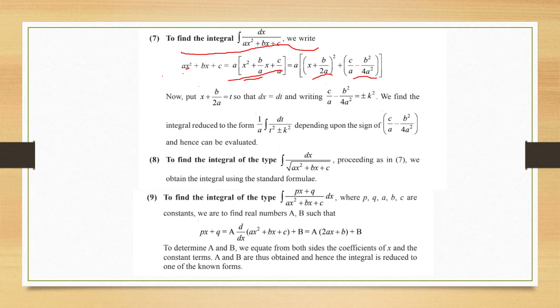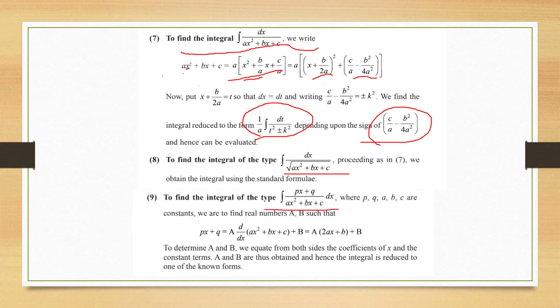Depending on the sign of the remaining constant, the quadratic reduces to either the form x² + a², x² − a², or a² − x². Type 8 is 1 upon √(quadratic) — again make a perfect square of the denominator and apply one of the standard formulas. Type 9 is linear upon quadratic, which is very important.